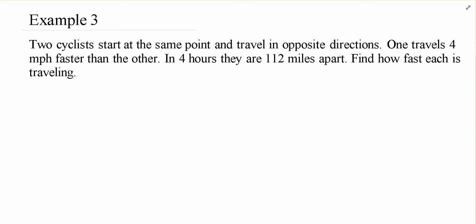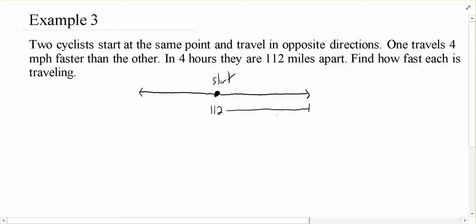So, let's read this one. We've got these two cyclists that start at the same point and travel in opposite directions. One travels four miles per hour faster than the other, and in four hours they are 112 miles apart. Find how fast each is traveling. So before I start trying to define any variables at all, I want to draw a very rough sketch of what's going on. They're starting at the same point. They travel in opposite directions. And after four hours, they're 112 miles apart.